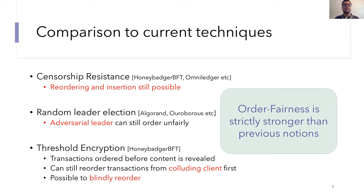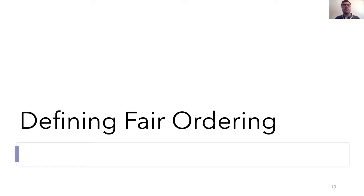So threshold encryption does prevent a lot of real world attacks, but it still has one major problem. If the adversarial node is colluding with the user, it knows which encryption corresponds to the user transaction, and therefore it can try to sequence it first. So our property of order fairness is actually strictly stronger than these earlier considered notions. So it should be able to prevent all kinds of censorship and insertion and reordering attacks. Alright, so hopefully by now I've convinced you that order fairness is indeed important to study, and that no current protocol actually achieves this notion.